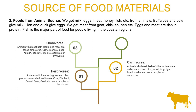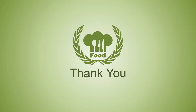Next are omnivores. The animals which eat both plants and meat are called omnivores. For example, crow, monkey, bear, human, sparrow, etc. — all these are omnivores. Next are scavengers. Some animals which eat the flesh of dead animals are called scavengers. Thank you, students.